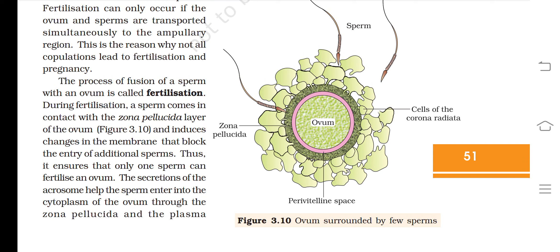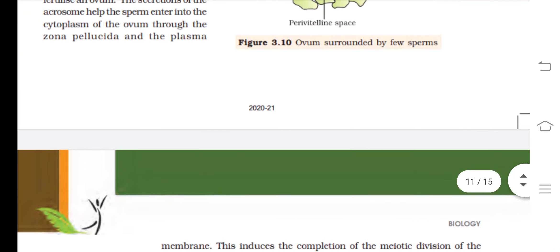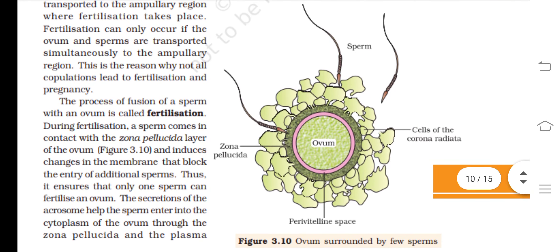The process of fusion of a sperm with an ovum is called fertilization. During fertilization, a sperm comes in contact with the zona pellucida layer of the ovum and induces changes in the membrane that block entry of additional sperms, ensuring only one sperm can fertilize an ovum. The secretions of the acrosome help the sperm enter into the cytoplasm of the ovum through the zona pellucida and the plasma membrane. Outside the ovum is the perivitelline space, then the zona pellucida, then the cells of corona radiata.